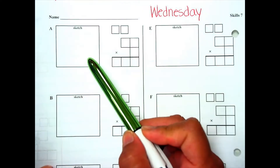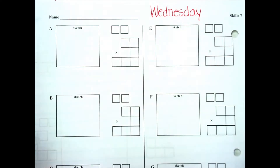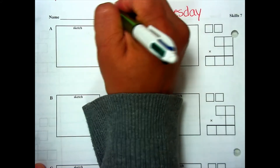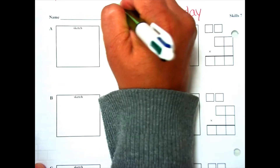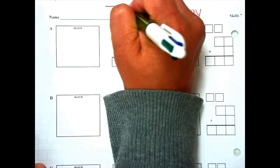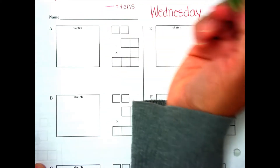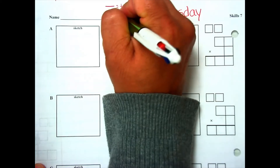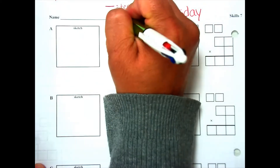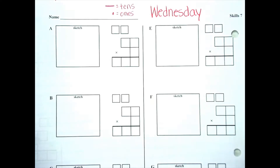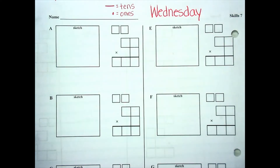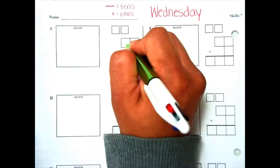Today we are going to be sketching our multiplication problems. When you see a line, that's going to represent our tens. The dot will represent our ones. So the line represents our tens and the dot represents our ones.